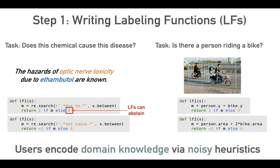We can also transfer the same idea of writing programmatic labeling functions to non-text domains like images, videos, and time series data. For example, we wanted to determine whether there's a person riding a bike in a particular image. We ran an off-the-shelf object detector over our images, then wrote labeling functions over the output — encoding common sense of what it looks like when a person is riding a bike: whether the person is above the bike, if their shapes are similar, if the number of people and bikes are the same.